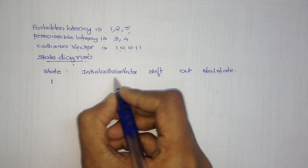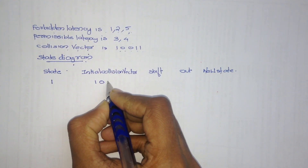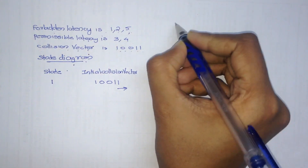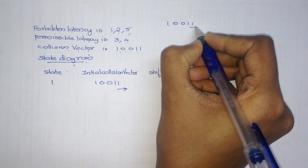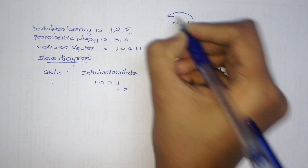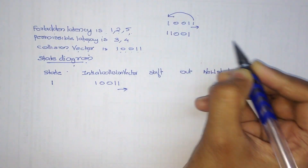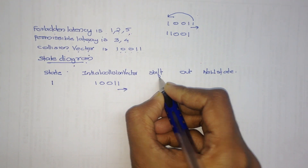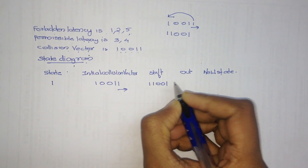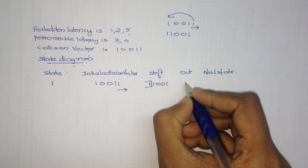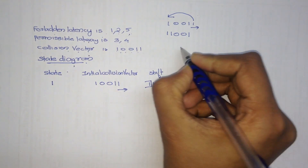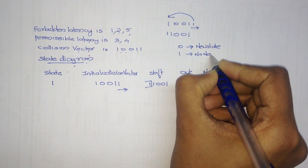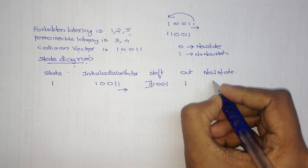For the first state, the initial collision vector is 1, 0, 0, 1, 1. Next, right shift is performed — right shift means placing the last value in front. So 1, 0, 0, 1, 1 becomes 1, 1, 0, 0, 1 after right shift. Now we omit the first value, which is 1. If the omitted value is 0, a new state occurs; if it is 1, no new state occurs. Here it is 1, therefore no new state occurs.